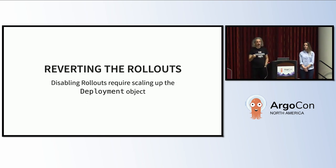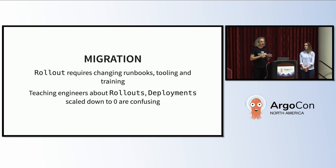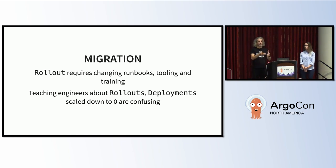We also have a fallback plan — what if we have to revert the rollout objects? When disabling rollouts, you need to make sure that your deployment object, if you have both a deployment and a rollout object, is scaled up when you delete the rollout object; otherwise you end up with zero replicas. Migration is also a bit painful because the new naming convention with rollout objects requires changing runbooks, tooling, and training — especially for on-call engineers. People on call look at the deployment and say, 'Oh, the deployment has zero replicas, something is going very wrong' — but pods are running. So you have to teach people and make sure they understand how this new thing works.